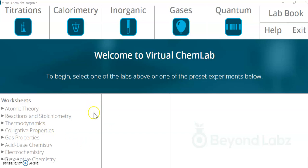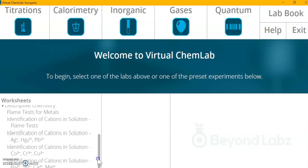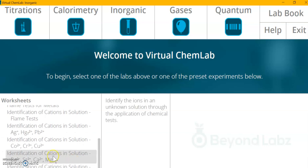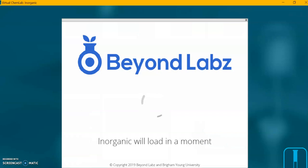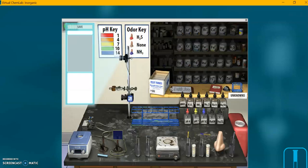I've already opened the virtual chemistry lab. I'm going over here to the worksheets descriptive chemistry. I'm going to scroll down here to the name of the lab and opening that up and here it goes.